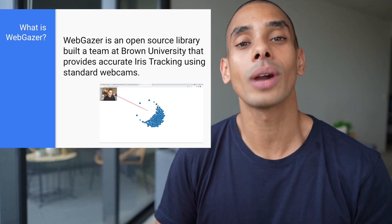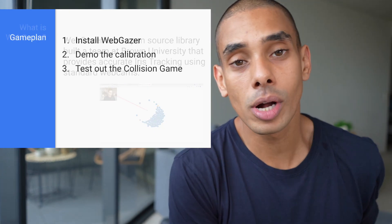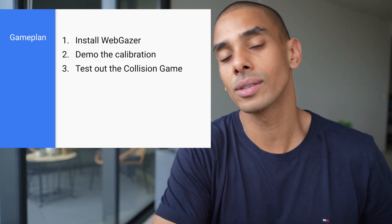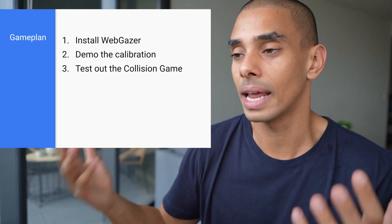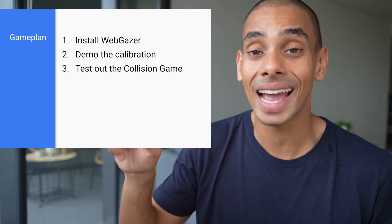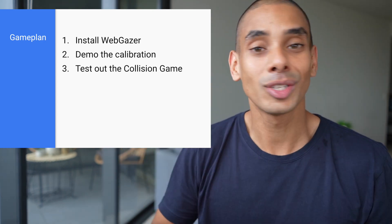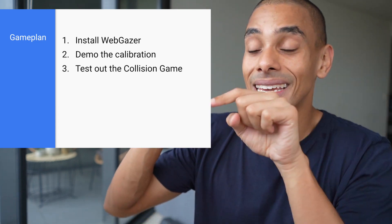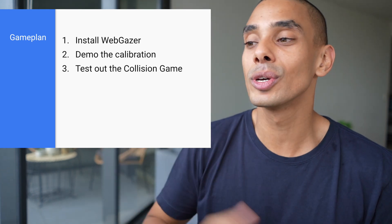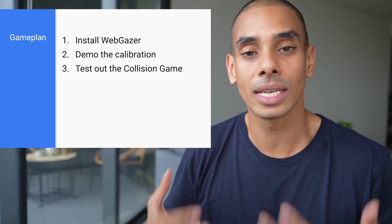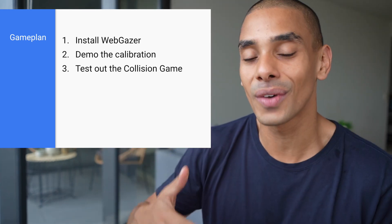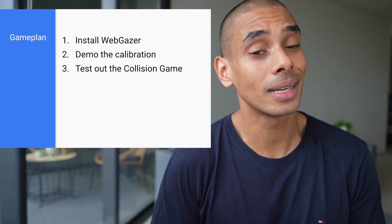Let's take a look at what we're going to be going through today. First up, we're going to be installing WebGazer — it's really straightforward, just an NPM install as long as you've got Node pre-installed. Then we're going to look at the calibration demo, which allows you to test how well it's tracking your eyes in real time. Then we'll test out the collision game. Everything today is part of the pre-built demo, but if you enjoy this video, we can build it into our own custom apps.